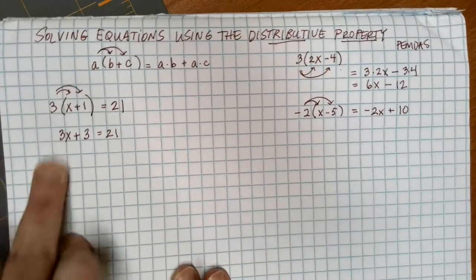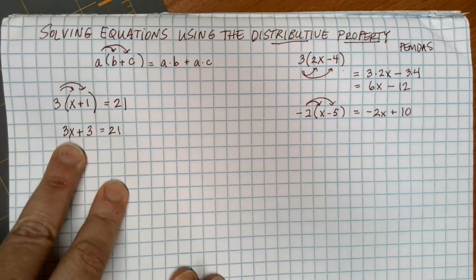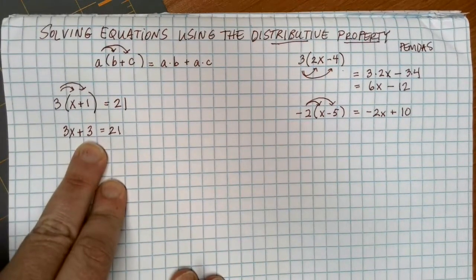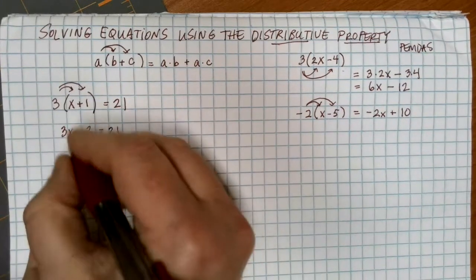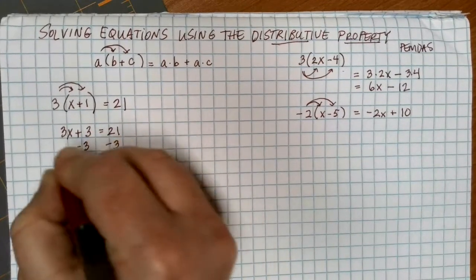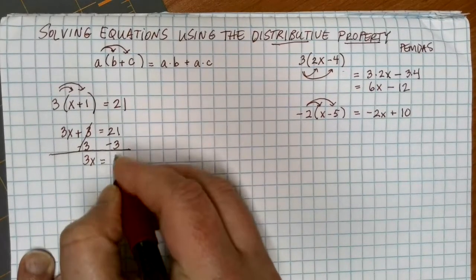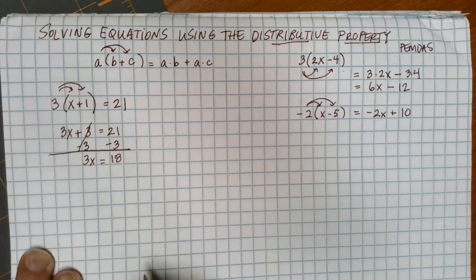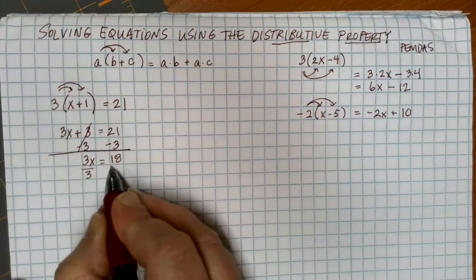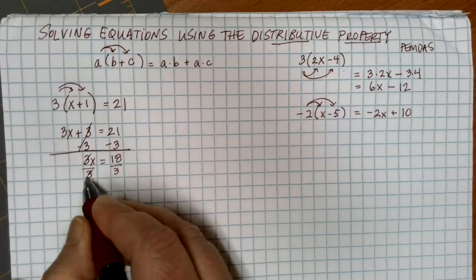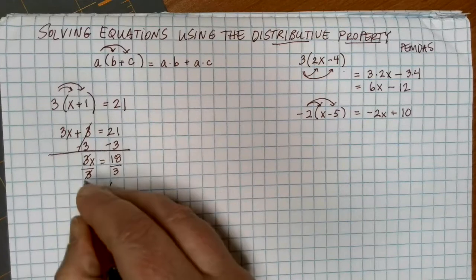Now I have just a standard two-step equation. I want to get the x by itself — it's being multiplied by 3, and we're adding 3 to that. We get rid of the weakest link first, doing that reverse PEMDAS. To get rid of a plus 3, I subtract 3 from each side. 3 minus 3 is gone, leaving 3x behind. 21 minus 3 gives me 18. I still need to get x alone, so I divide by 3 on each side. 18 divided by 3 gives me 6 as a solution.